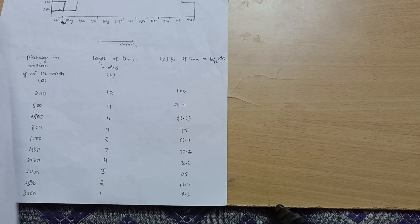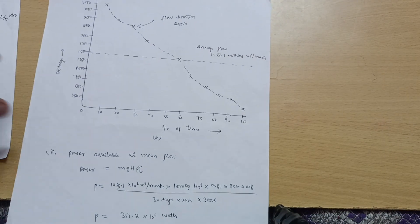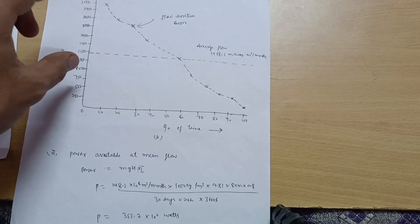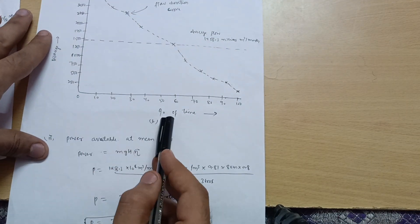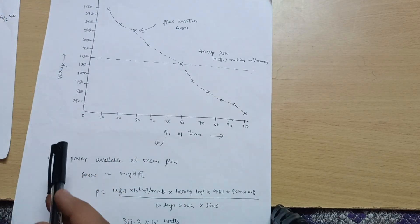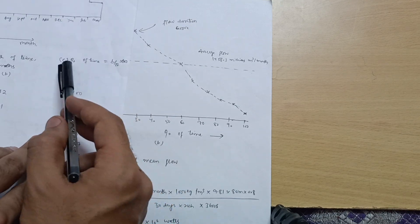Now it is time to draw the flow duration curve. It is a graphical representation between percentage of time and discharge. We have already calculated the percentage values.